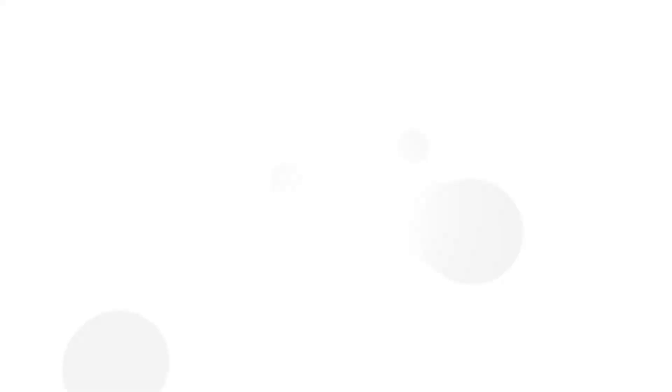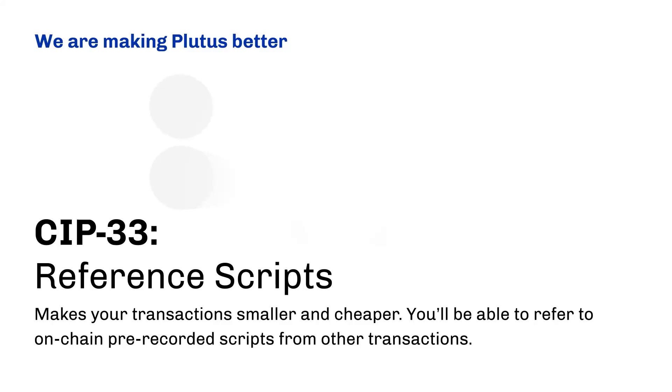With CIP 32, you're going to be able to actually store the data on chain, moving much closer to a truly decentralized architecture. CIP 33 — reference scripts — is another critical one. On Ethereum, contracts live on the chain and you talk to them by reference. In Cardano, we've had to include the script in the transaction every time we're interacting with it. CIP 33 changes that. You can now push a script or contract onto the chain and then interact with it via a reference — a very lightweight way to interact with a smart contract. Rather than having all of the app logic in your transaction, you just have a small address like an email address that points to the script already on chain.